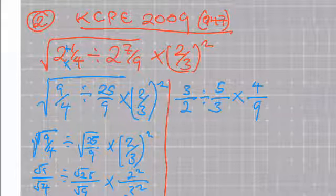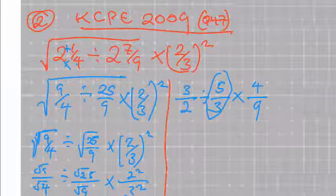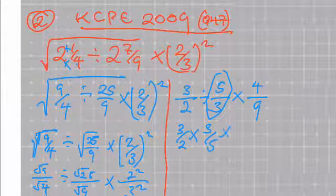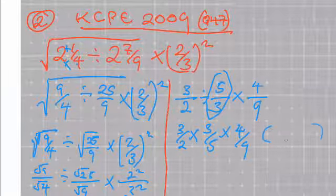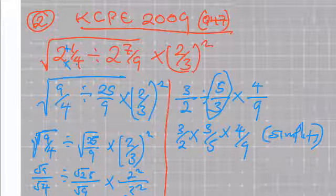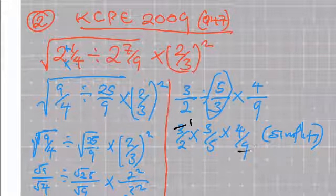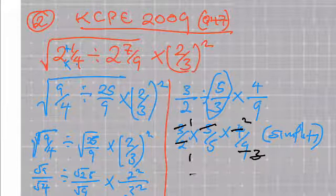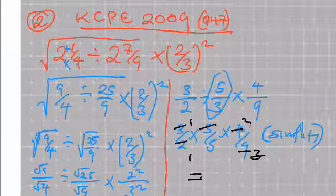Because this is division, we multiply by the reciprocal of this number. So that gives you 3 over 2 multiplied by 3 over 5 multiplied by 4 over 9. You are then allowed to simplify: 3 goes with 3, and 2 goes with 4 twice. So that gives you a final answer of 2 over 5.